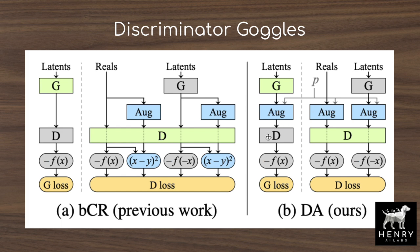As the paper notes about discriminator goggles: it's not clear that this would work, because if the discriminator never sees what the training images look like, it's not clear it can guide the generator properly. It's interesting that this strategy works at all, since the discriminator doesn't directly know the real data distribution and has to uncover it through augmentations. The key difference from balanced consistency regularization is that the original unaugmented images are never viewed — only augmented views are used, and the consistency loss term is not applied.